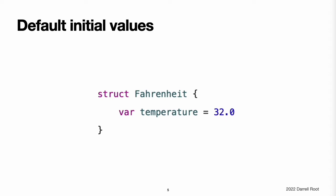You specify a default property value by assigning an initial value to the property when it is defined. Note: if a property always takes the same initial value, provide a default value rather than setting the value within an initializer. The end result is the same, but the default value ties the property's initialization more closely to its declaration. It makes for shorter, clearer initializers and enables you to infer the type of the property from its default value. The default value also makes it easier to take advantage of default initializers and initializer inheritance. You can write the Fahrenheit structure in a simpler form by providing a default value for its temperature property at the point that the property is declared.